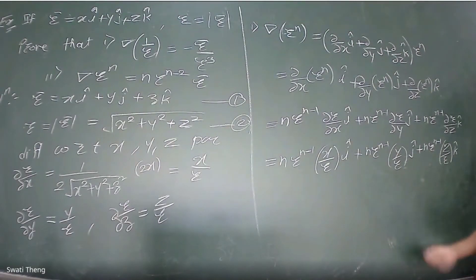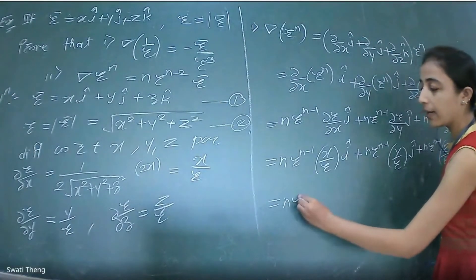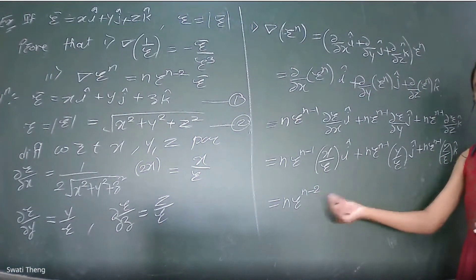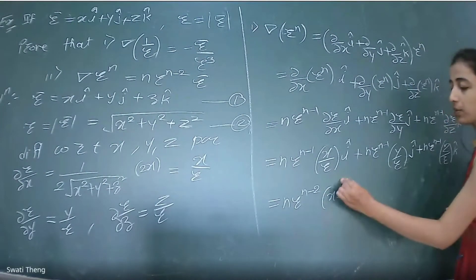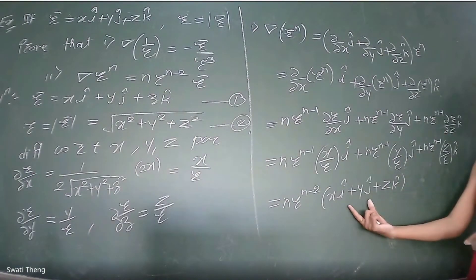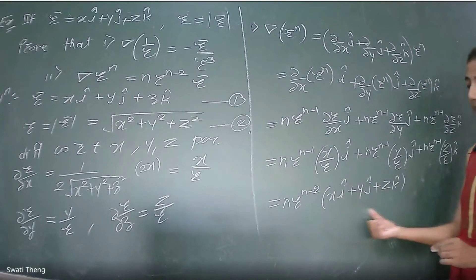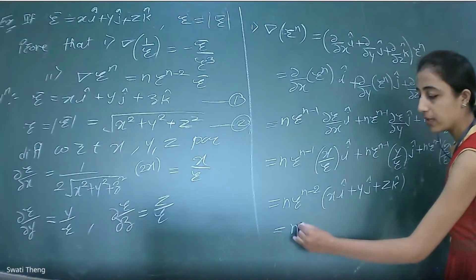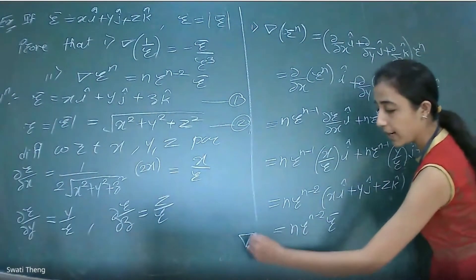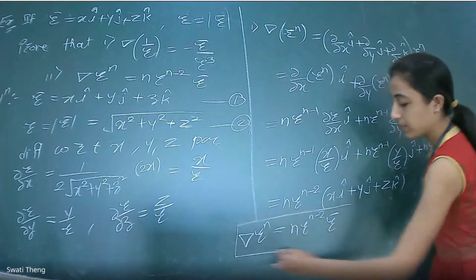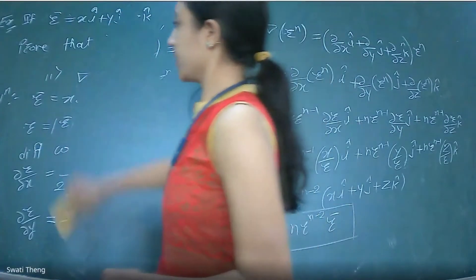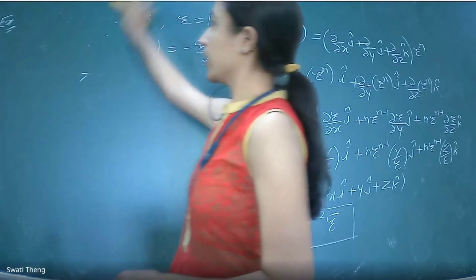Putting in the common factor, ∇(rⁿ) = n·r^(n-2)·r̄. This completes the second identity. Next, we consider the scalar potential function φ and its gradient. If we take the gradient of a surface, we can find the normal vector.